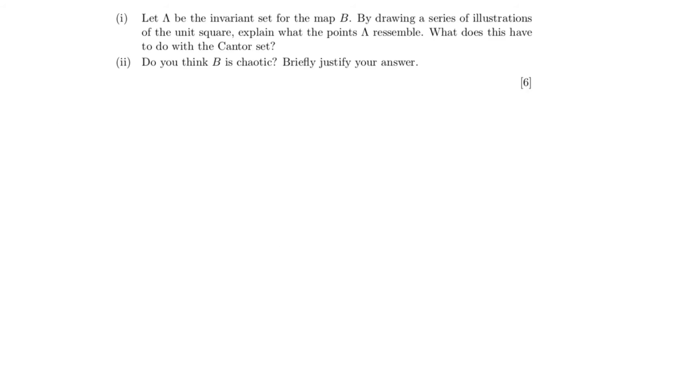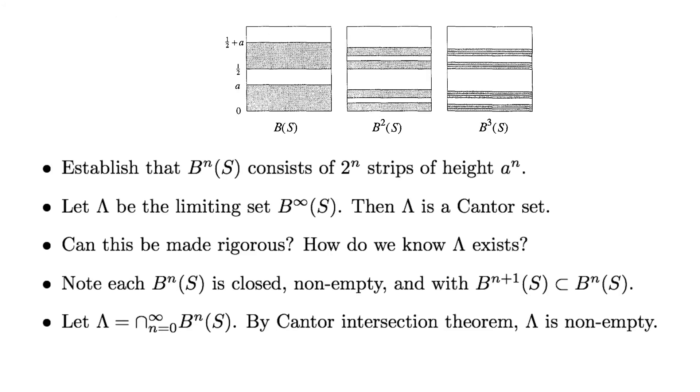Let us now return to the original question, which asked the student to draw a series of illustrations showing the convergence of the mapping procedure to the invariant set. And we have just done that. The question also asked to explain what this has to do with the Cantor set, and so I'll give the technical answer here. We have already established that B to the N of S consists of 2^N strips of height a^N. Let lambda be the limiting set B infinity of S. Then lambda is a Cantor set.